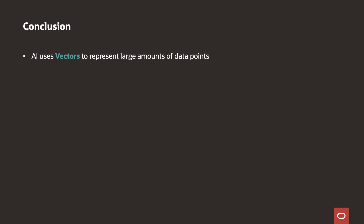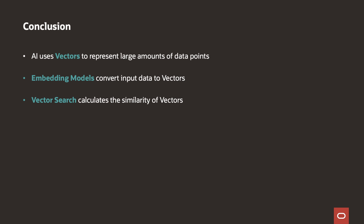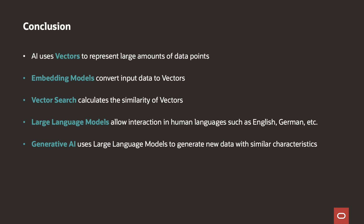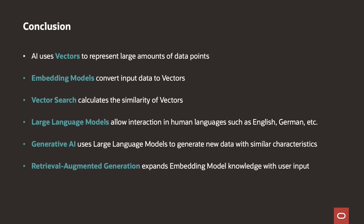To conclude: vectors represent features of complex unstructured data, and you can now store these in Oracle Database 23AI. Embedding models convert input data to vectors, and Oracle Database 23AI can execute these embedding models on your data. Vector Search finds similar data based on the distance between corresponding vectors, as demonstrated in SQL examples. Generative AI uses embedding models to generate new data with similar characteristics — such as text input that generates SQL statements. And Retrieval Augmented Generation expands the embedding model's knowledge with current data. All of this is now available as part of Oracle Database 23AI, so go check it out and see which amazing apps you can build.